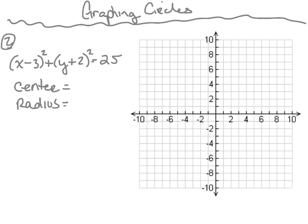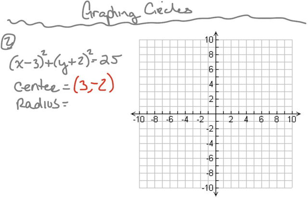Example number 2: we've got x minus 3 squared plus y plus 2 squared equals 25. In order to graph this circle, the first thing we need to locate is our center, which is h, k. h is going to be the opposite of negative 3, which is positive 3. k is going to be the opposite of positive 2, which is negative 2. So the center of our circle would be at the ordered pair 3, negative 2, right here. That's going to be the center of our circle.